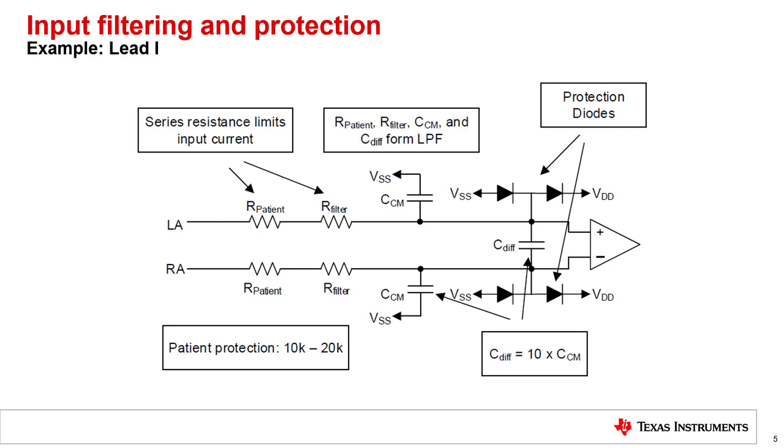We still need the common mode capacitors to filter out high-frequency common mode signals, but it should not be the bulk of the filtering, otherwise the component tolerances can degrade our CMR. We'll talk about CMR in more depth when we discuss the right leg drive amplifier. And finally, number three, we need a diode circuit to protect against defibrillator shocks. A defibrillator can deliver voltages in the kilovolt range to help the patient restore normal heart rhythm. When properly designed, the diodes will clamp the input voltage to within the absolute maximum input voltage of the INA, and the resistors will limit the current that flows through the diodes.